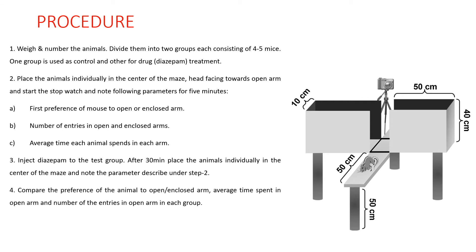Compare the preference of the animal to open and closed arm, the average time spent in the open arm, and the number of entries in the open arm in each group. This is the plus maze instrument used for this experiment. The elevated plus maze consists of a plus-shaped maze elevated above the floor with two oppositely positioned closed arms, two oppositely positioned open arms, and a center area.